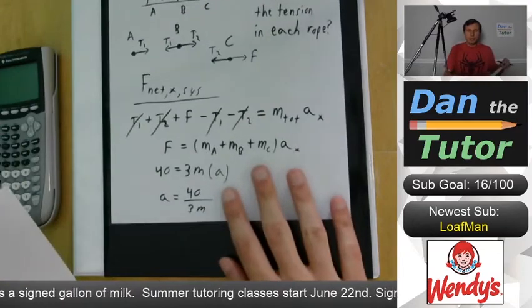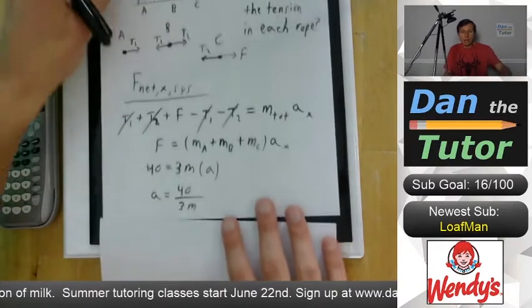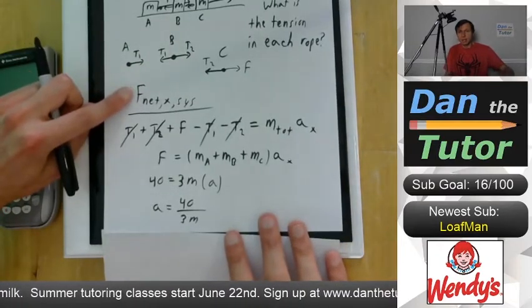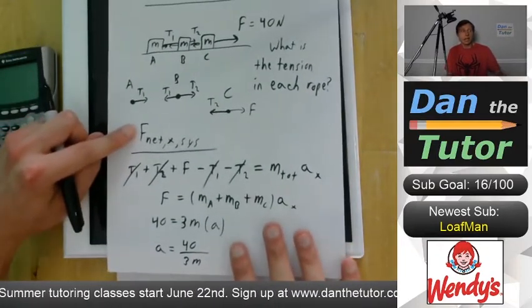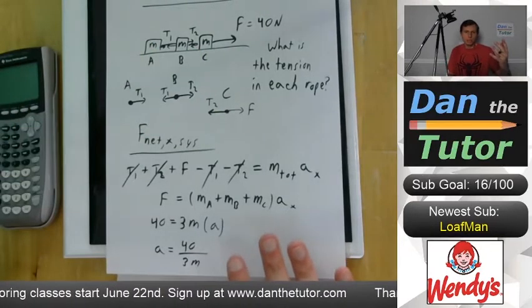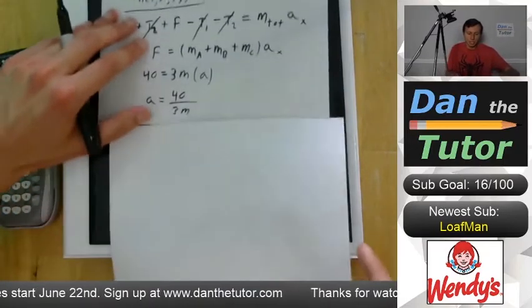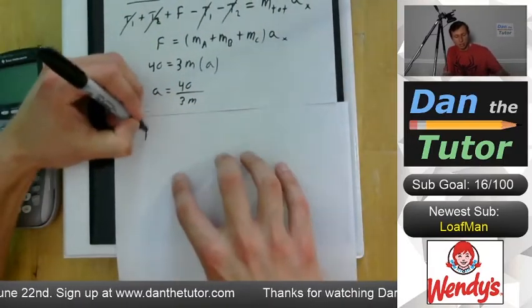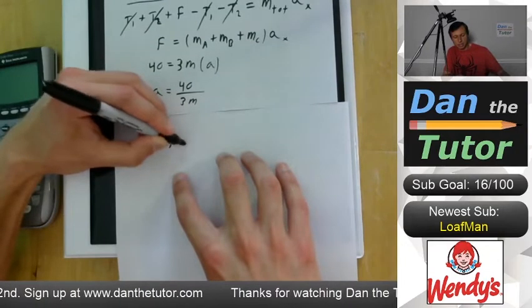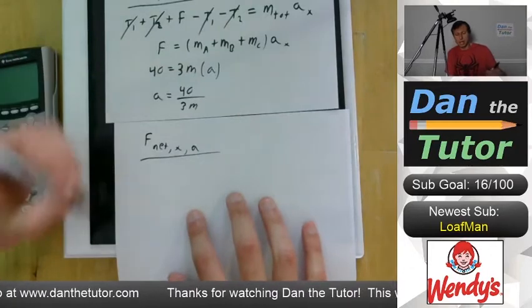And now if we think about how do we find T1 and T2, the tension in each rope, we just drew F net X of the system, right? Now we need to do F net X of either mass A, mass B, or mass C. We can choose any of the three. I'm just going to choose mass A because it has the least forces touching it. You can choose whatever you want. We're going to get the same answer. So if I do F net, comma, X, comma, A for the net force acting on block A in the X direction, we're going to look back at the free-body diagram.